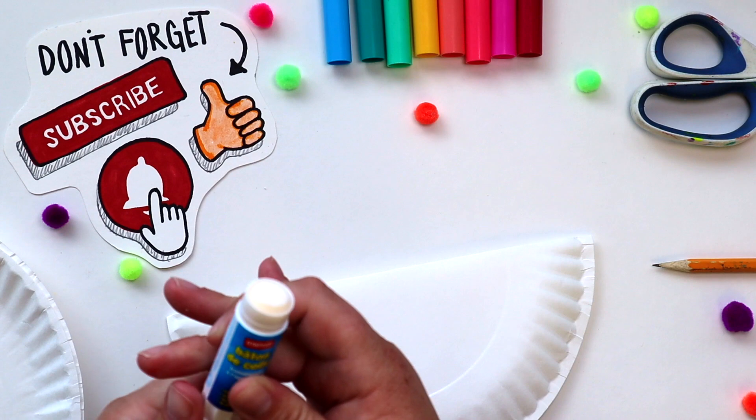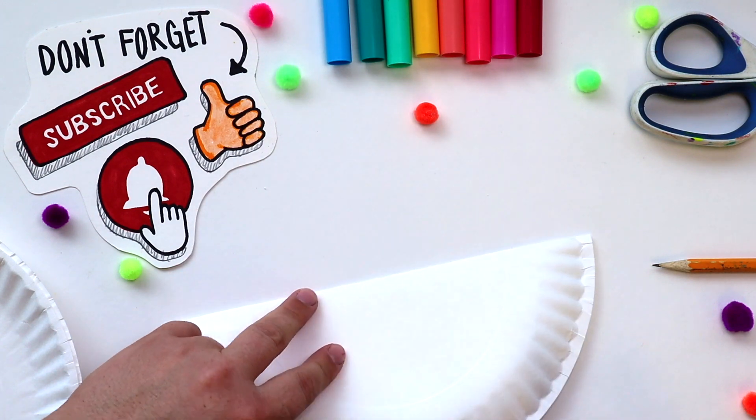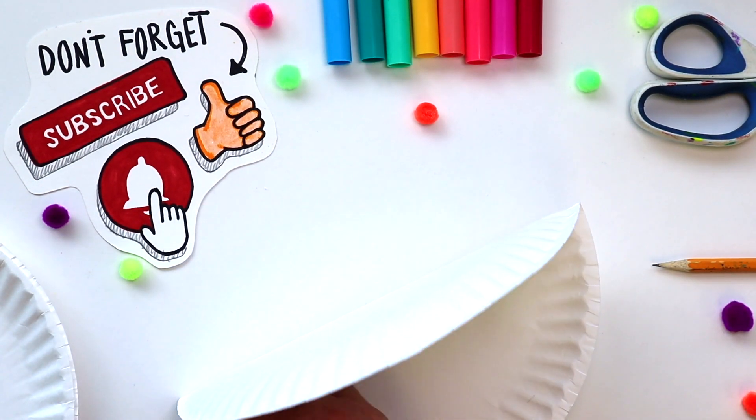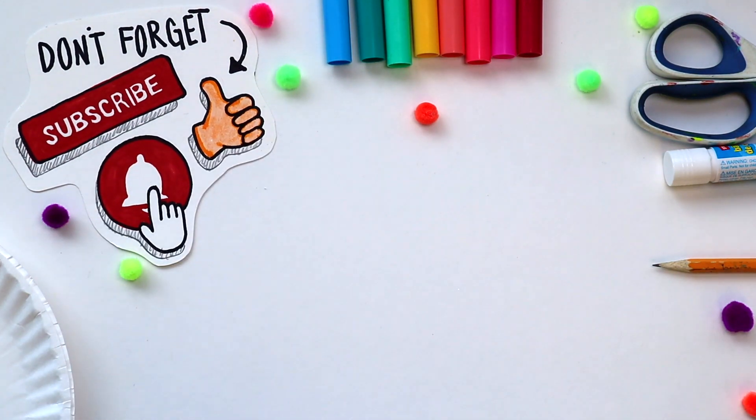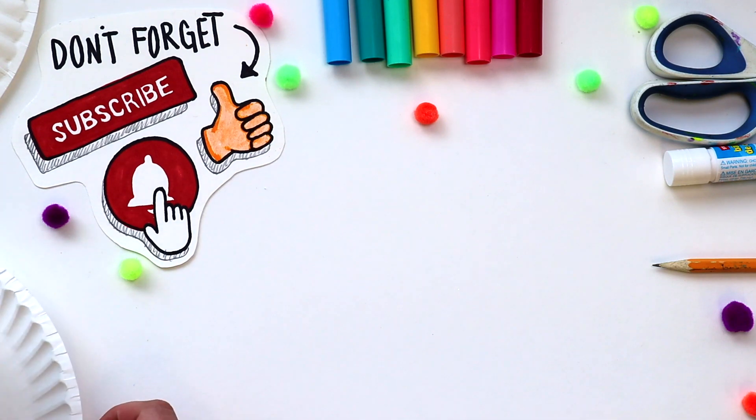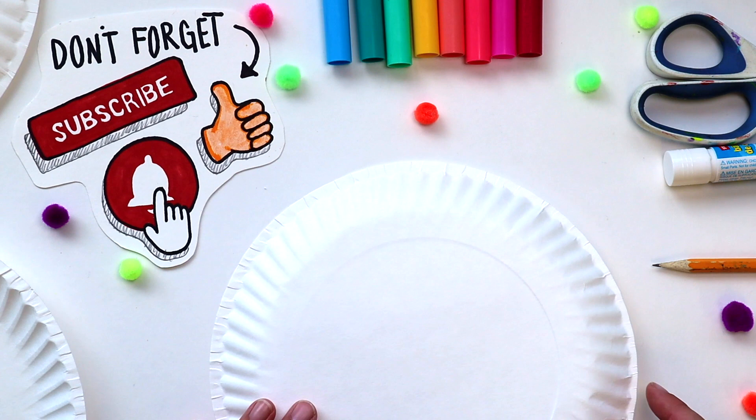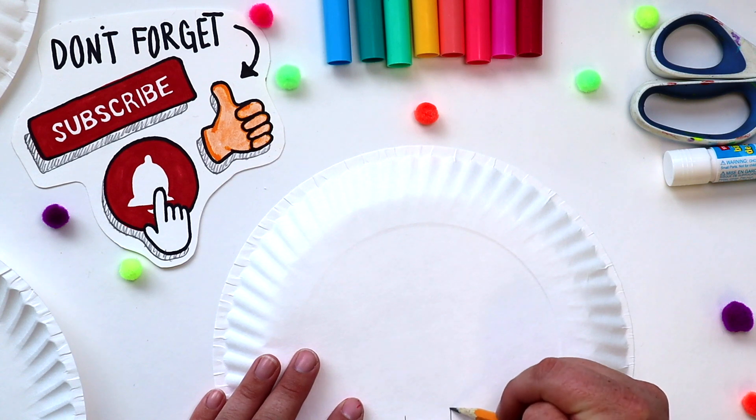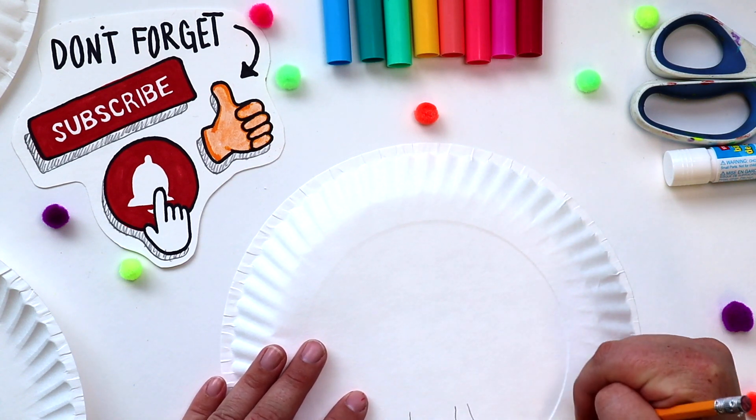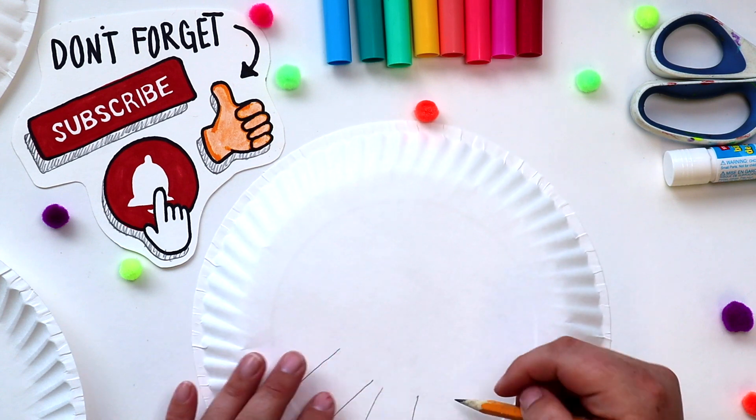We're going to just glue the two edges together so it stays closed. Great, now we're going to get out our second paper plate. Let's flip it on over and we're going to draw on our llama's legs. Grab your pencil and let's draw really tall U's. Sorry you can't see it at the moment. I'll turn the plate in just a minute so you can see what I'm talking about.